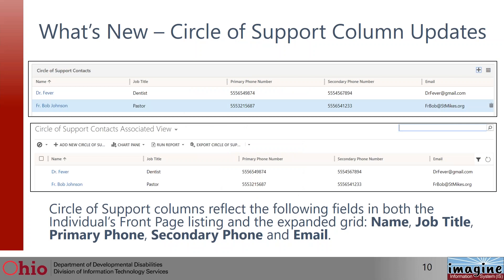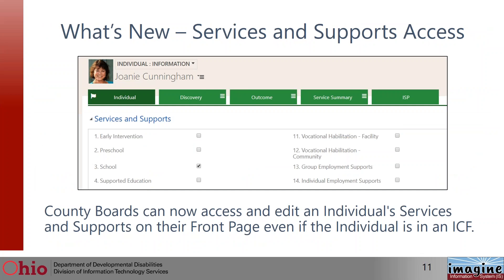We're going to go to the individual's front page updates. The first thing: circle of support column updates. The circle of support columns will now reflect name, job title, primary phone, secondary phone, and email — on the main front page and also in the expandable grid. Everything will be consistent and give you the most pertinent information. Second, services and supports access: before, if an individual is in an ICF, this section would be locked to the SSA. Now it is unlocked and you can edit those fields whether they're in an ICF or not.